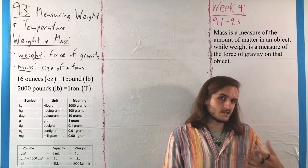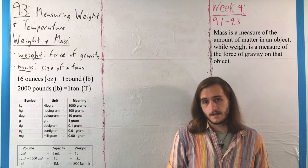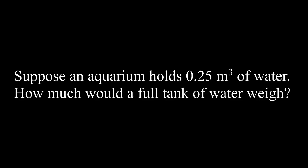So, what we're going to do here is get one quick example for how this comes together in terms of multidimensional analysis. For this example, suppose an aquarium holds 0.25 cubic meters of water, and we want to find how much the full tank of water weighs.